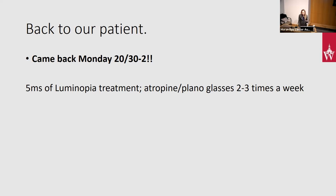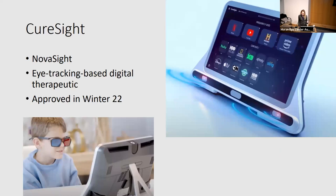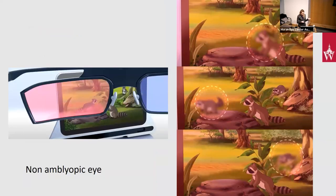Going back to our patient: he improved from 20/60 to 20/40 at the end of the first three months of Luminopia therapy, and his stereo acuity improved slightly. Worth noting the confounder — I couldn't bring myself to stop the atropine because I couldn't see how one hour of Luminopia was equivalent to all the amblyopia treatment we were piling on. But when he came back on Monday he was 20/30 minus two, which was mind-blowing. He's seven now and aging out of some of the digital library content, using Luminopia closer to four to five times a week while doing atropine plus plano closer to three times a week. The plan is to be happy with where he's at and start to pull back treatment. With a fundus photo like this, it was a pretty exciting outcome.